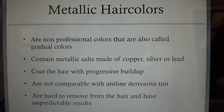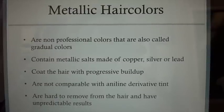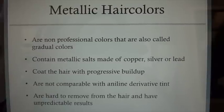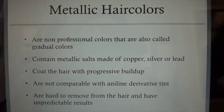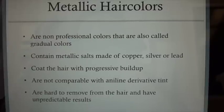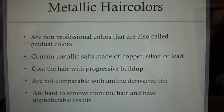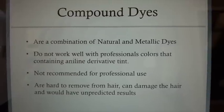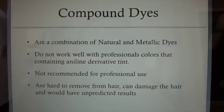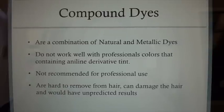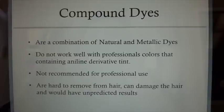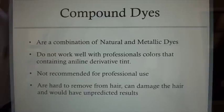Metallic hair colors are non-professional colors also called gradual colors. They contain metallic salts made of copper, silver, or lead. They coat the hair with progressive buildup. They are not compatible with aniline derivative tint and are hard to remove from the hair with unpredictable results. Compound dyes are a combination of natural and metallic dyes. They do not work well with professional colors containing aniline derivative tint, are not recommended for professional use, are hard to remove from hair, can damage the hair, and would have unpredicted results.